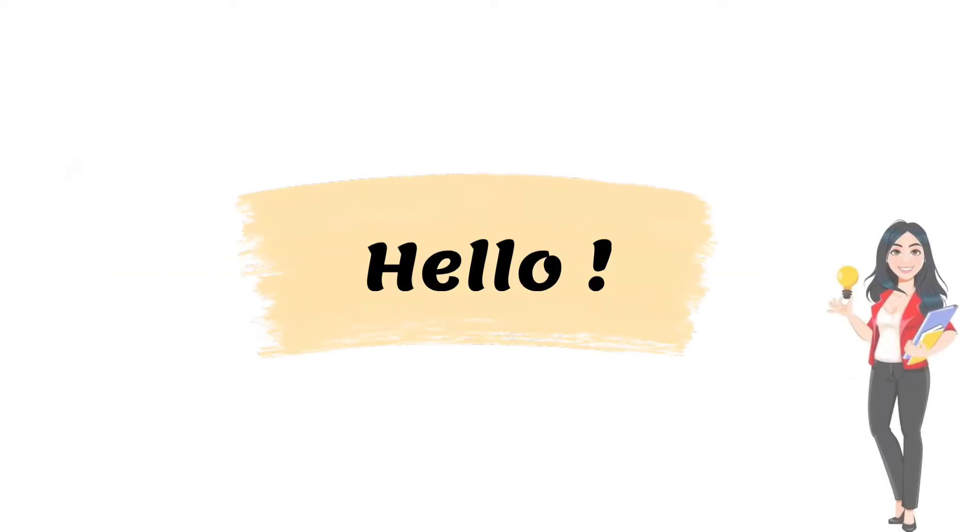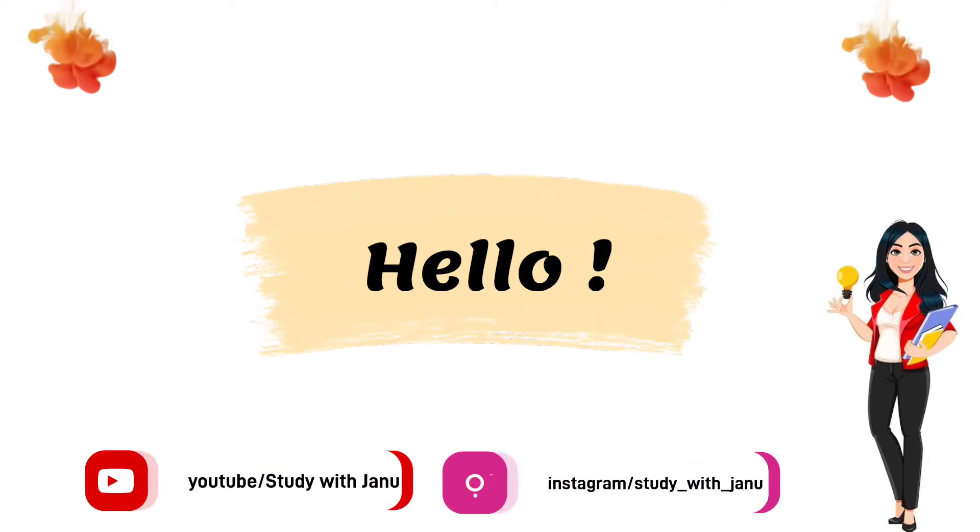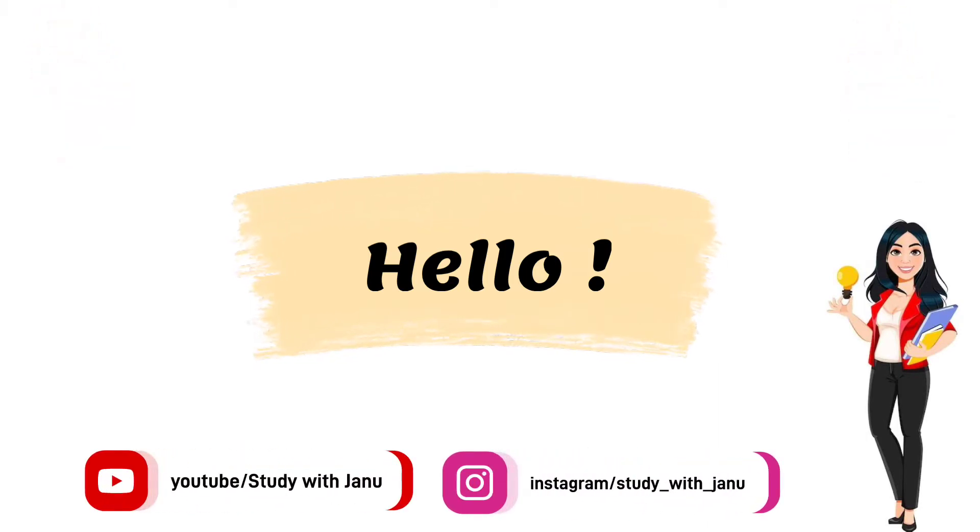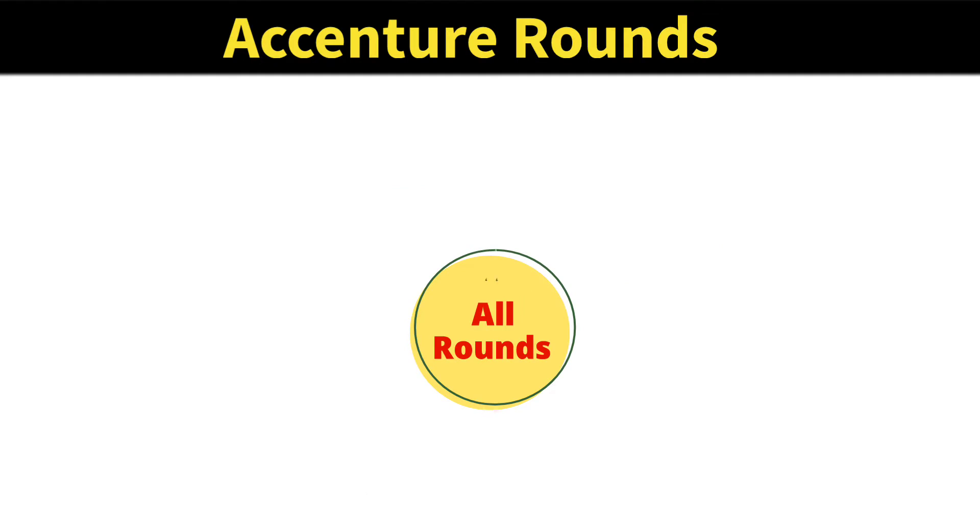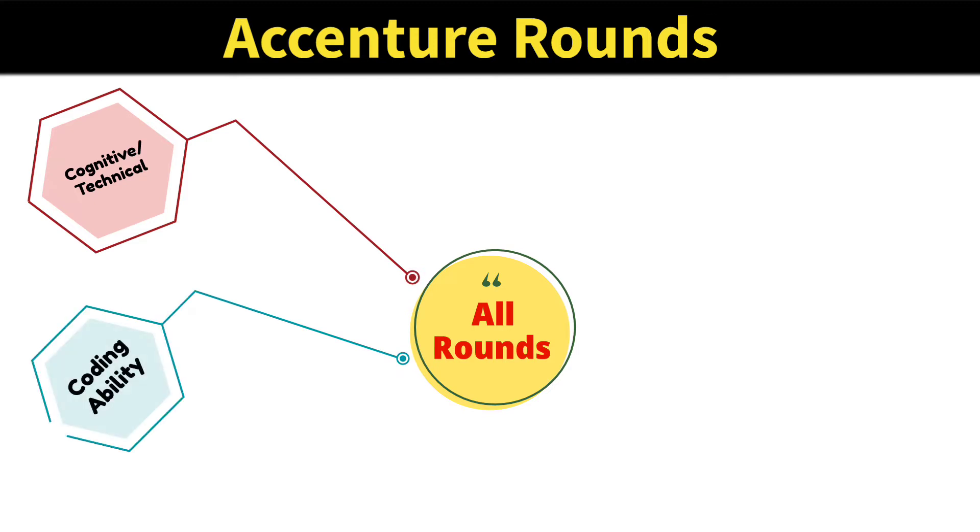Hello everyone, I'm back with another informative video on the Accenture recruitment process. Let's see in detail: the first round is cognitive and technical assessment, second is coding ability, third is communication assessment, and the final round is interview, which is a combination of technical and HR. Now let's see every single round in detail.